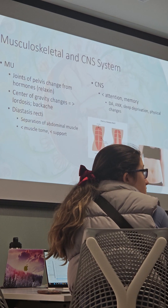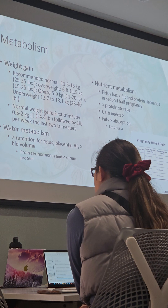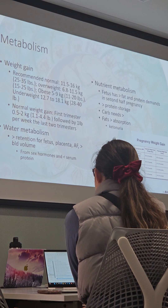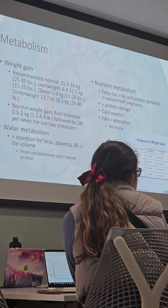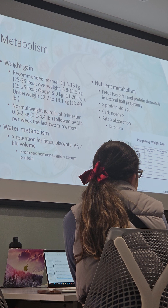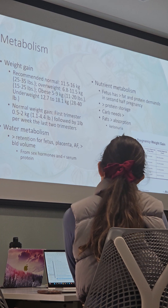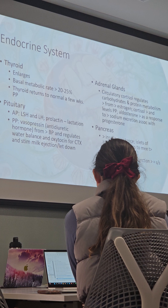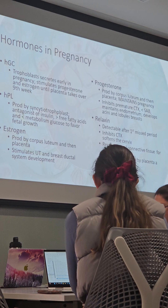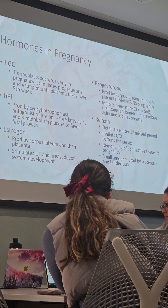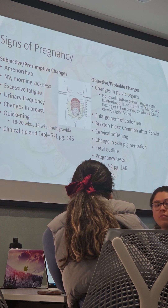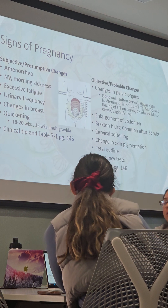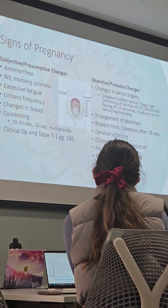Know all the normal changes with the GI system, urinary system — all the systems. This is an important slide: know the anticipated normal weight gain for somebody who is normal weight, underweight, overweight, and obese. Know all the normal endocrine system changes and the hormones of pregnancy and their role. Know all the subjective and objective changes — when you can feel quickening and Braxton Hicks.